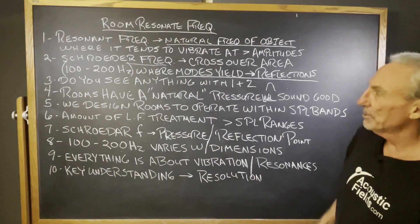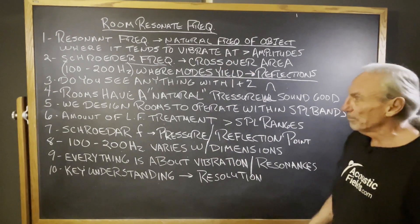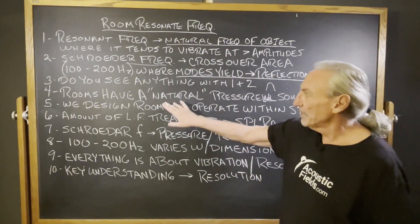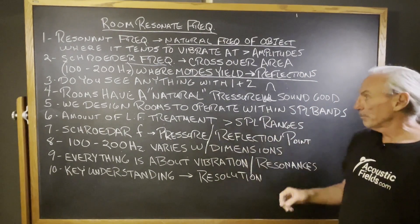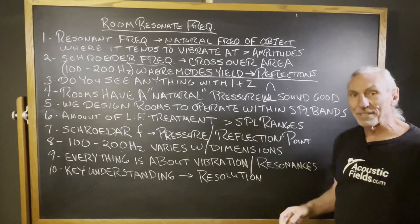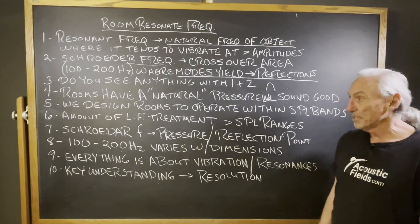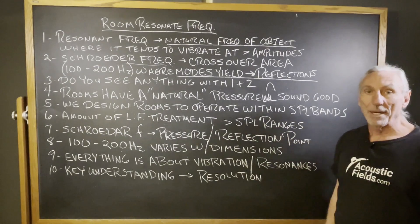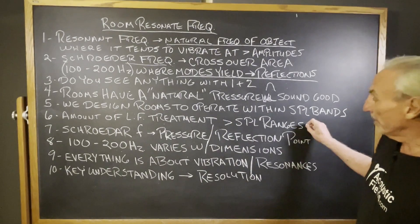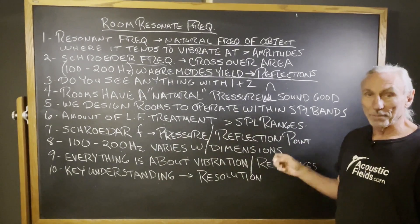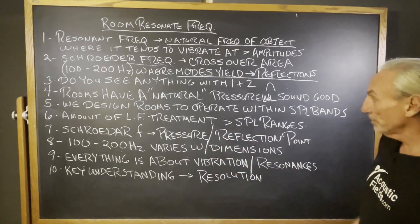So we have Schroeder frequency and resonant frequency — all these frequencies. Rooms have a natural pressure sound level that they work at. When we design rooms, we design them to operate in certain SPL bands depending on usage. Live rooms are different than two-channel rooms, which are different than theater rooms. But you can design a room to manage a certain frequency range that you're going to listen at. It's all about pressure. The amount of low-frequency treatment will increase with pressure — you have to have more surface area, higher rates and levels if you have more pressure in a smaller room.